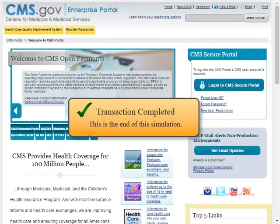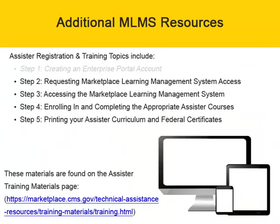Transaction completed. This is the end of the simulation. Additional MLMS resources: Assister registration and training topics include Step 1, creating an Enterprise Portal Account; Step 2, requesting Marketplace Learning Management System access; Step 3, accessing the Marketplace Learning Management System; Step 4, enrolling in and completing the appropriate Assister courses; Step 5, printing your Assister Curriculum and Federal Certificates. These materials are found on the Assister Training Materials page at marketplace.cms.gov/technical-assistance-resources/training-materials/training.html.